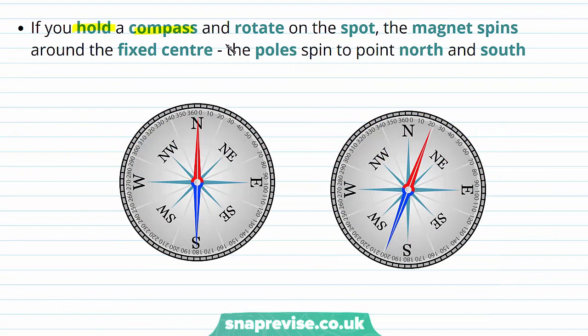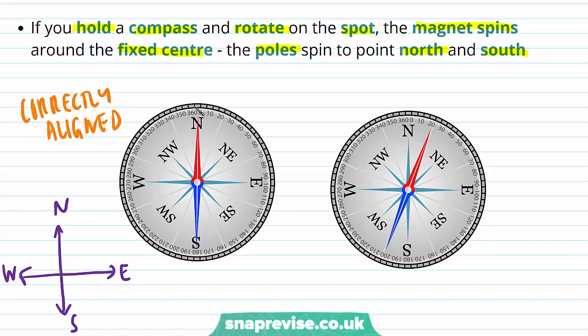If you hold a compass and rotate on the spot, the magnet spins around the fixed centre and the poles spin to point north and south. So in the case on the left here, the poles are aligned as follows. You can see that the magnet is correctly aligned, so the north pole is lined up with the background N and the south pole is lined up with the background S.